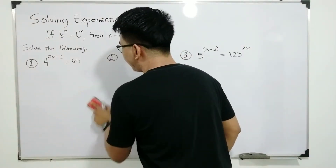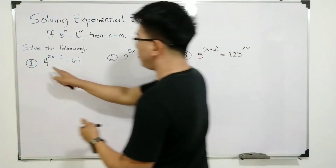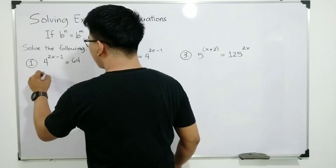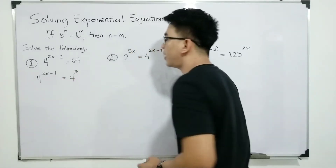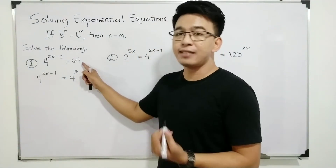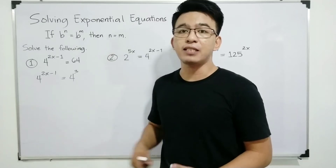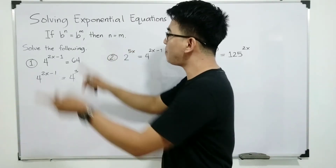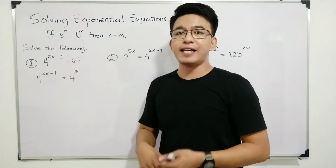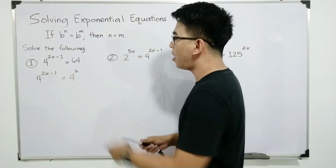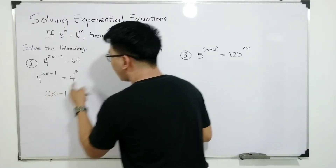So, what you will do is write the exponential equation with the left side as 4 raised to 2x minus 1, and 64 expressed as 4 raised to 3. As you can see, expressing 64 as 4 cubed makes the bases equal. Since the bases are equal, going back to the property, we can equate the exponents. Our new equation to solve for the variable x is 2x minus 1 is equal to 3.